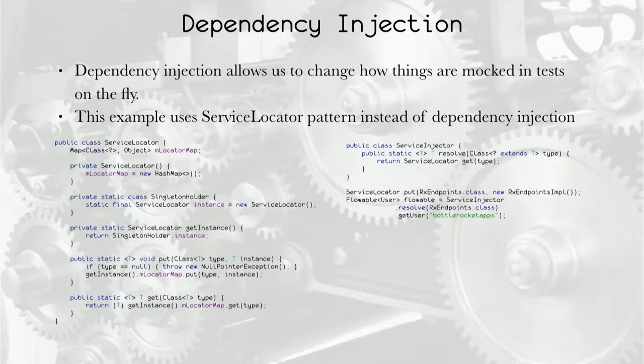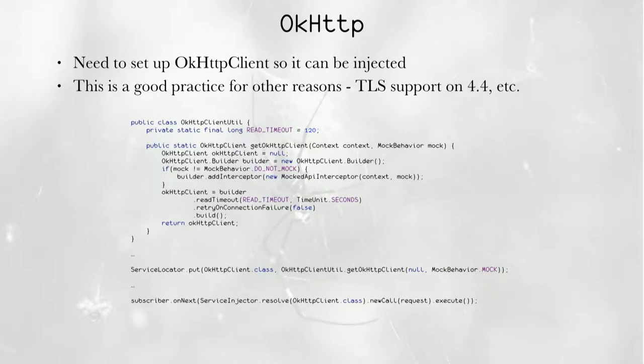And this will return the GitHub user that is the company I work for. We also need OkHttp. That needs to be injectable because we're going to inject a different interceptor depending on what kind of mocking behavior we want. So this is where the interceptor goes that does the mocking. And then we're putting it in the service locator. When we make our OkHttp calls, we resolve the client and we make a call against it.